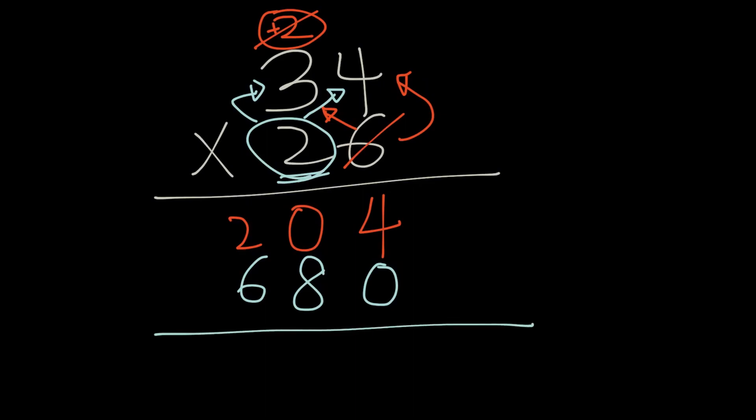Now we can go ahead and do the addition here. 4 plus 0 is 4. 0 plus 8 is 8. 2 plus 6 is 8. Therefore, our answer is 884.